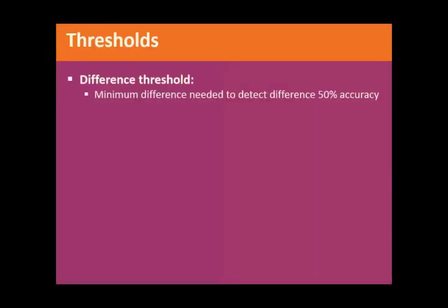Difference thresholds. The difference threshold is the minimum amount of difference needed for you to detect that there is a difference with 50% accuracy.